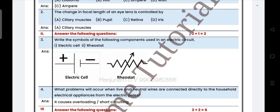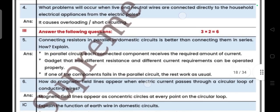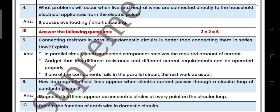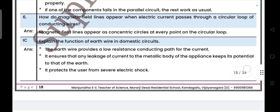Next one, write the symbol of the following components used in electric circuit. First one, electric cell. Second one, rheostat. You have to write the symbol, so that carries one more mark. Next question, what problem will occur when live and neutral wires are connected directly to the household electric appliances from the electric poles? It causes overloading and short circuiting. This is a two mark question. Connecting resistors in parallel in domestic circuit is better than connecting them in series, how? Explain. Try to write point wise. Each point carries half mark. If they are asking for two marks, you have to write at least four points.